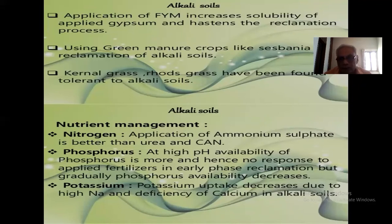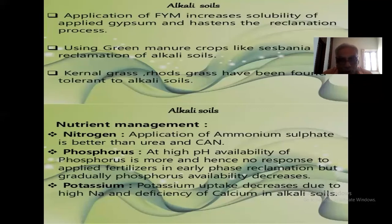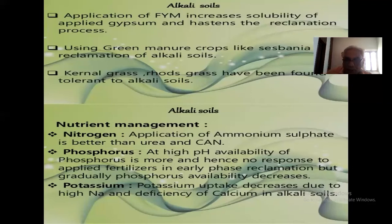Regarding phosphorus: at high pH, availability of phosphorus is more, and hence there is no response to applied fertilizer in the early phase of reclamation. But gradually phosphorus decreases. When pH is greater than 8.5 phosphorus is more available initially, so when we apply phosphatic fertilizer in alkali or sodic soil we are not getting a response. But after some time, when plant growth attains, then you apply phosphorus and you get a response.